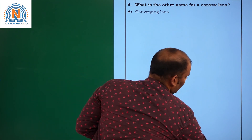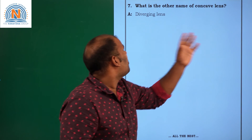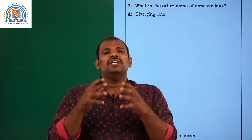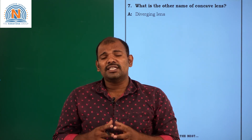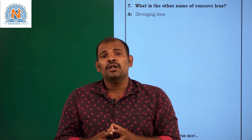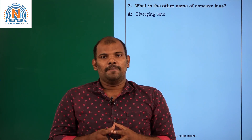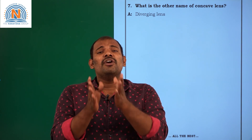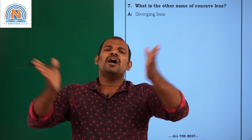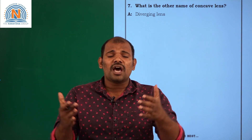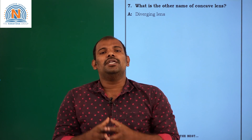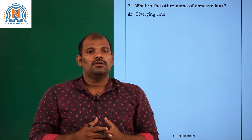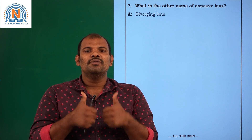Question number 7: What is the other name of a concave lens? A concave lens is also called a diverging lens. In the case of a convex lens, after refraction the rays come towards a point, but in the case of a concave lens they depart — they are separated and move in different directions, not converging at a point. That is why it is called a diverging lens. Thank you students. Stay home, stay safe.